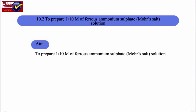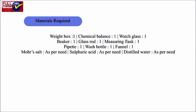Experiment 10.2: To prepare 1/10 M ferrous ammonium sulphate (Mohr's salt) solution. Aim: To prepare 1/10 M ferrous ammonium sulphate solution. Materials Required: Weight Box, Chemical Balance, Watch Glass, Beaker, Glass Rod, Measuring Flask, Pipette, Wash Bottle, Funnel, Mohr's Salt, Sulphuric Acid, and Distilled Water.